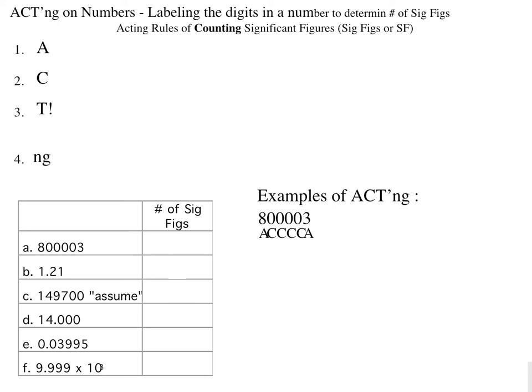Thus, all digits here, when we add up these letters, total of 6, are significant. So we have 6 significant figures for 800,003.